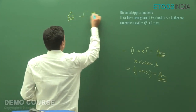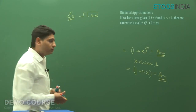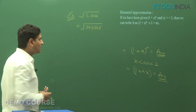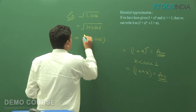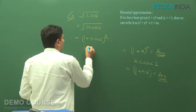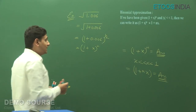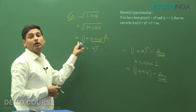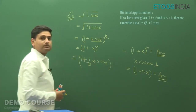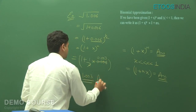Consider this example: find the value of √1.006. We can write this as √(1 + 0.006), which equals (1 + 0.006)^(1/2). Since 0.006 is very very small compared to 1, we can apply the binomial approximation: 1 + (1/2) × 0.006. The 2 cancels, giving 0.003, so the answer is 1.003.